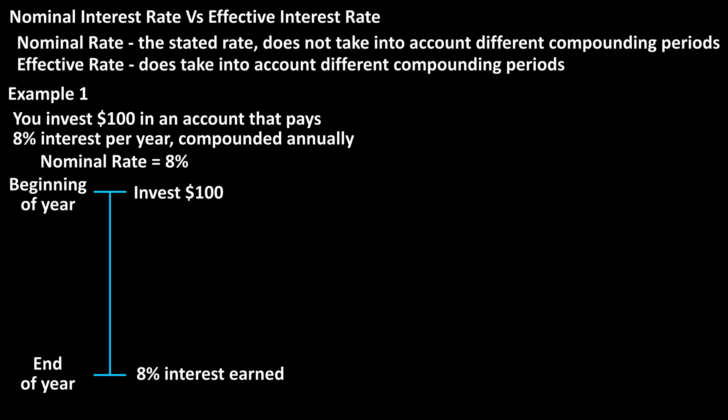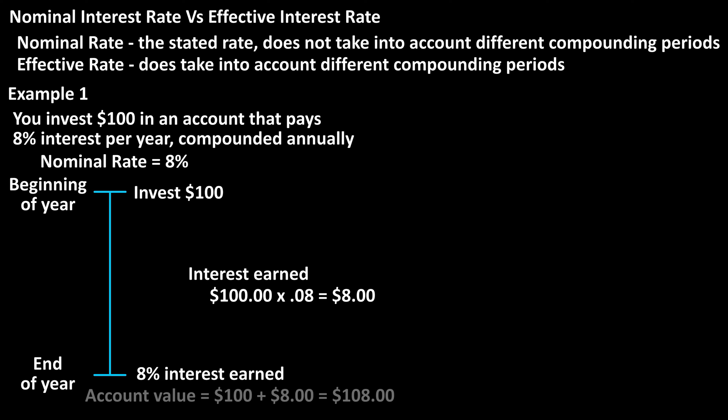Since it is compounded yearly, at the end of each year you will receive 8% interest on your investment. To calculate this, we multiply $100 times 0.08, the decimal value of 8%, which equals $8. So after one year, you will have $108 in the account — the $100 original investment plus the $8 of interest earnings.